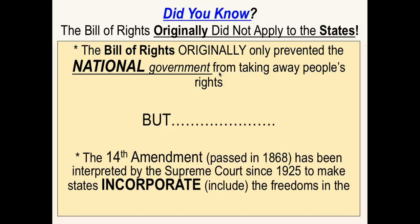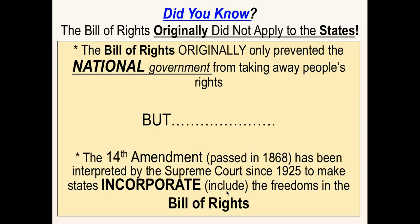However, changes came after the 14th Amendment was passed in 1868 following the Civil War. The Supreme Court eventually began to incorporate — a great word meaning to include — the freedoms of the Bill of Rights. What that means is that states have to make sure that people's Bill of Rights freedoms, like the right to speech and speedy trial, cannot be taken away by states. If you take a more advanced course, you'll learn that not every single freedom in the Bill of Rights must be recognized by states. For your class, all you need to know is how the Bill of Rights at first did not apply to the states, but now it does because of Supreme Court decisions.